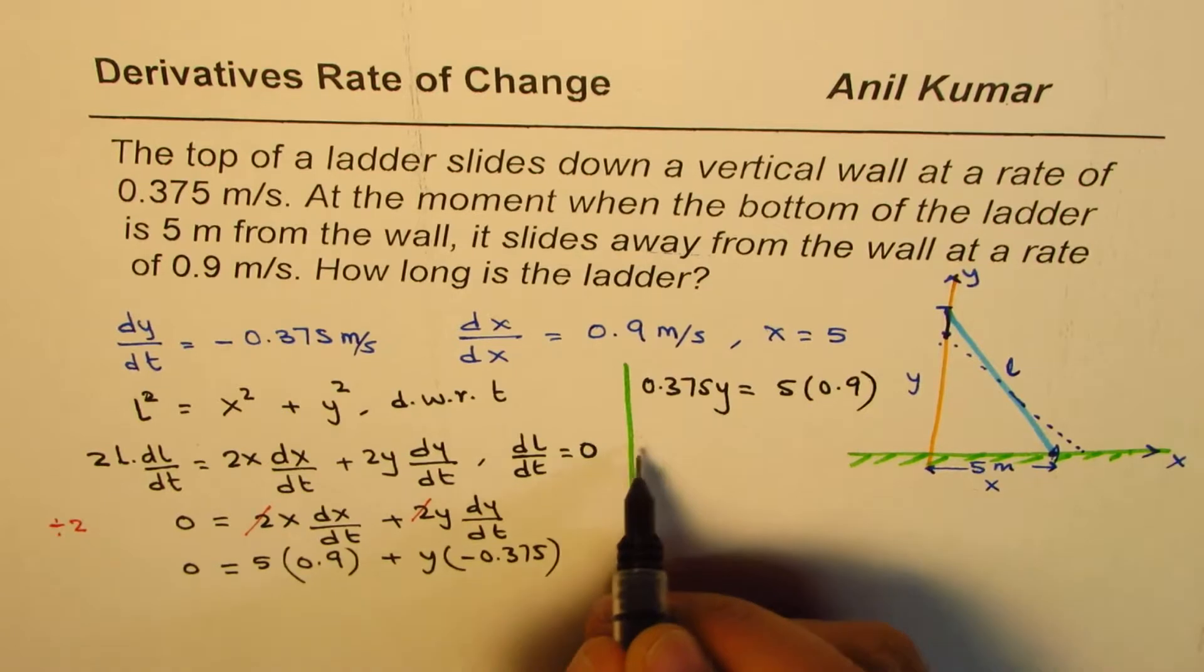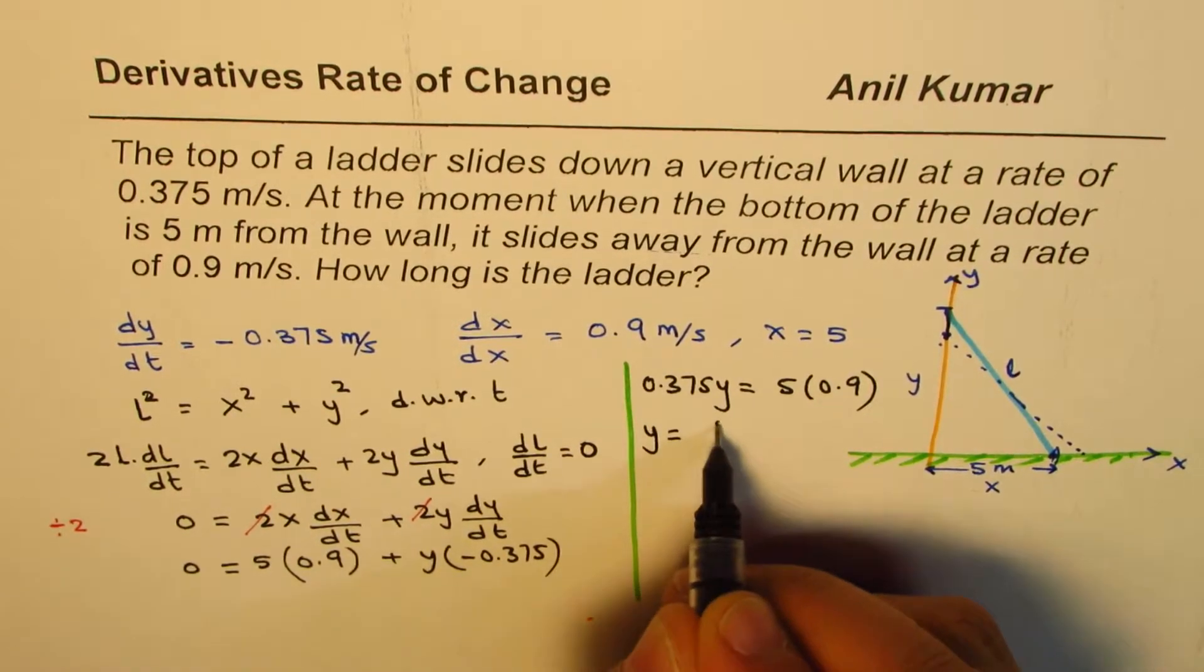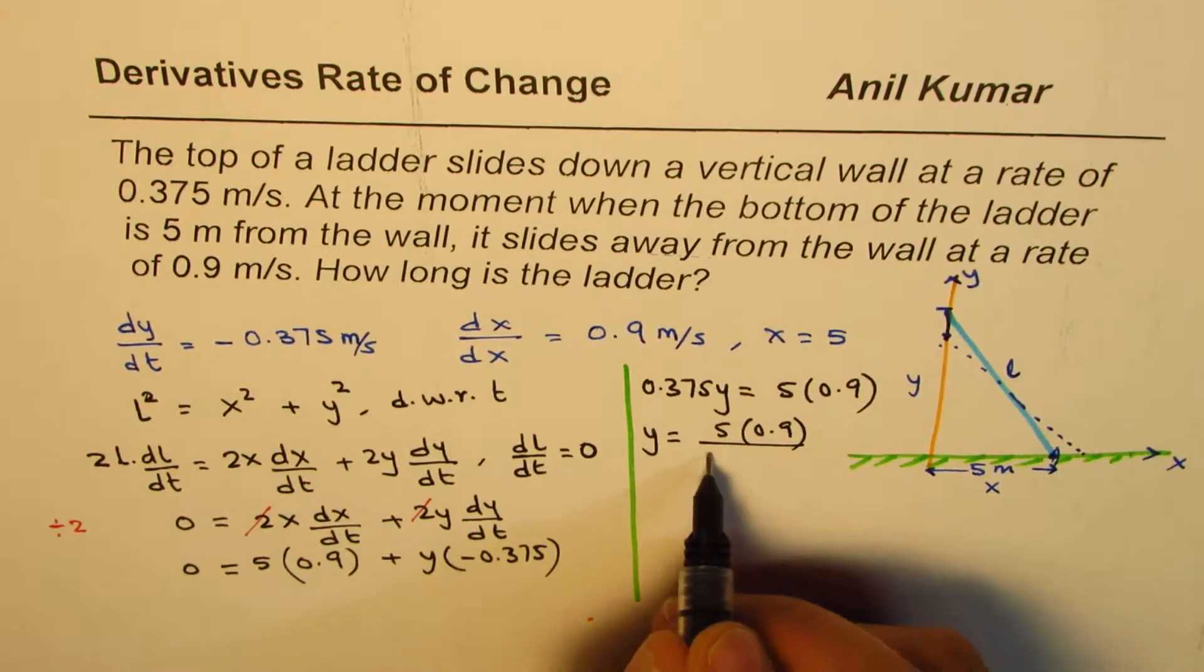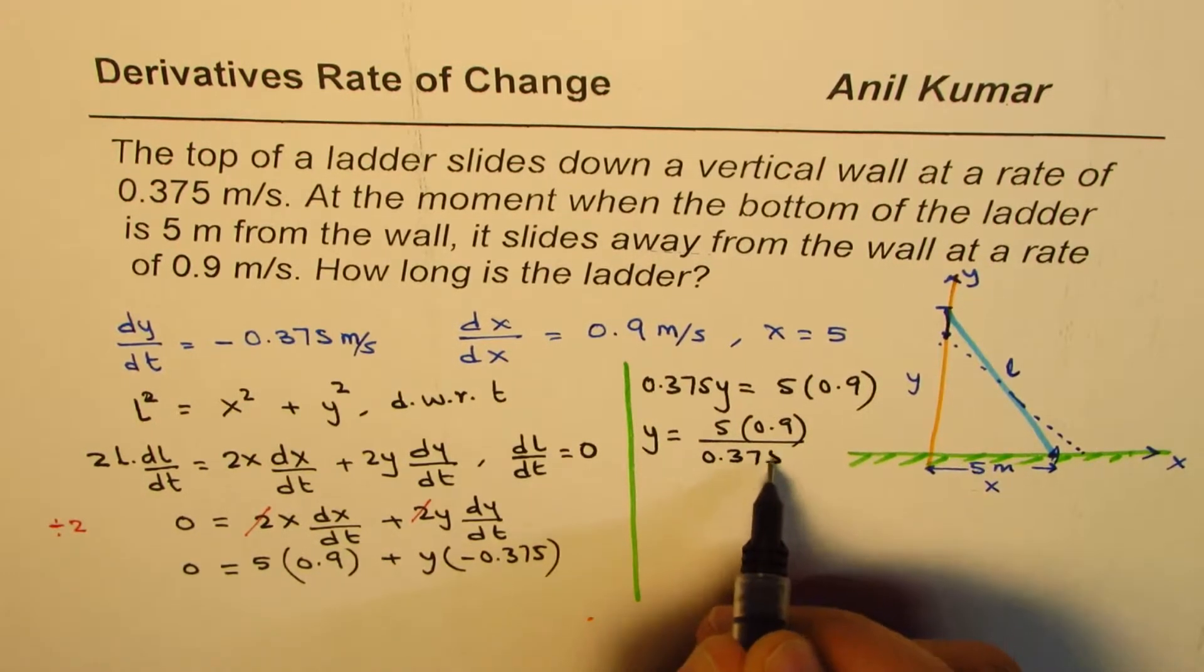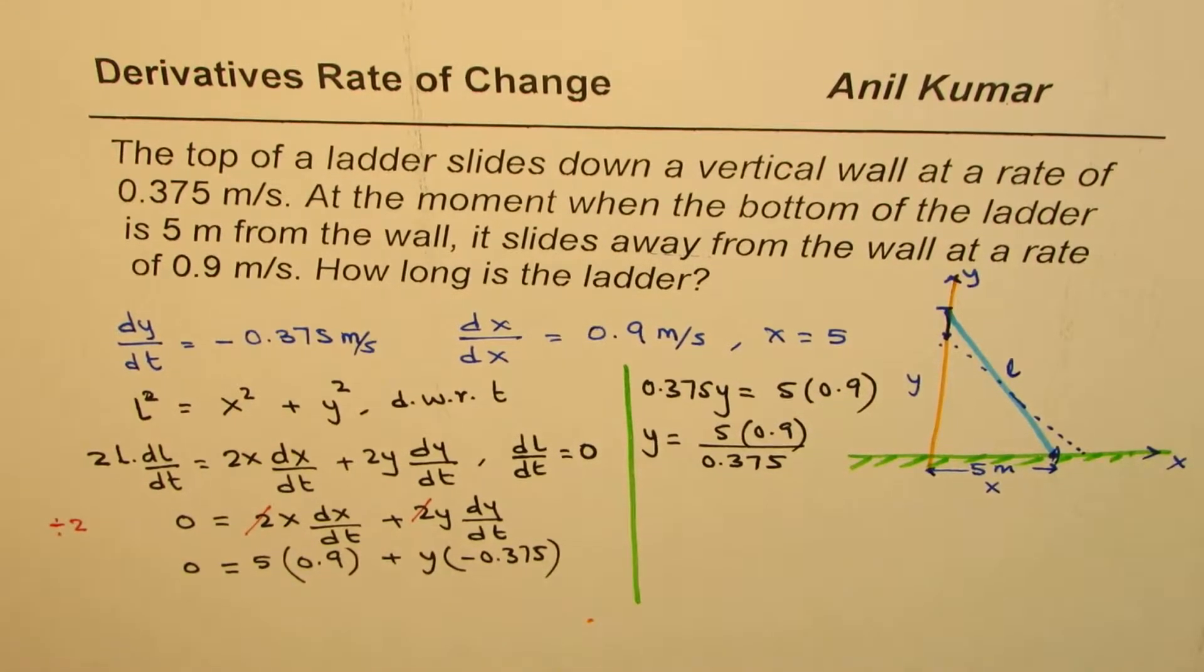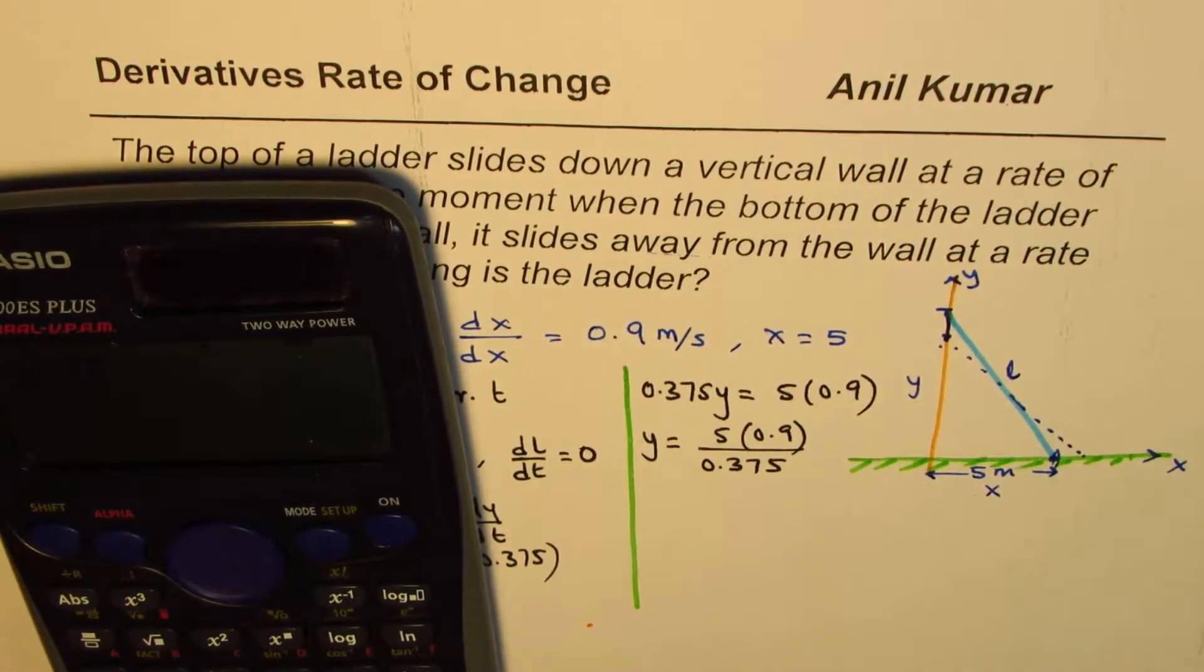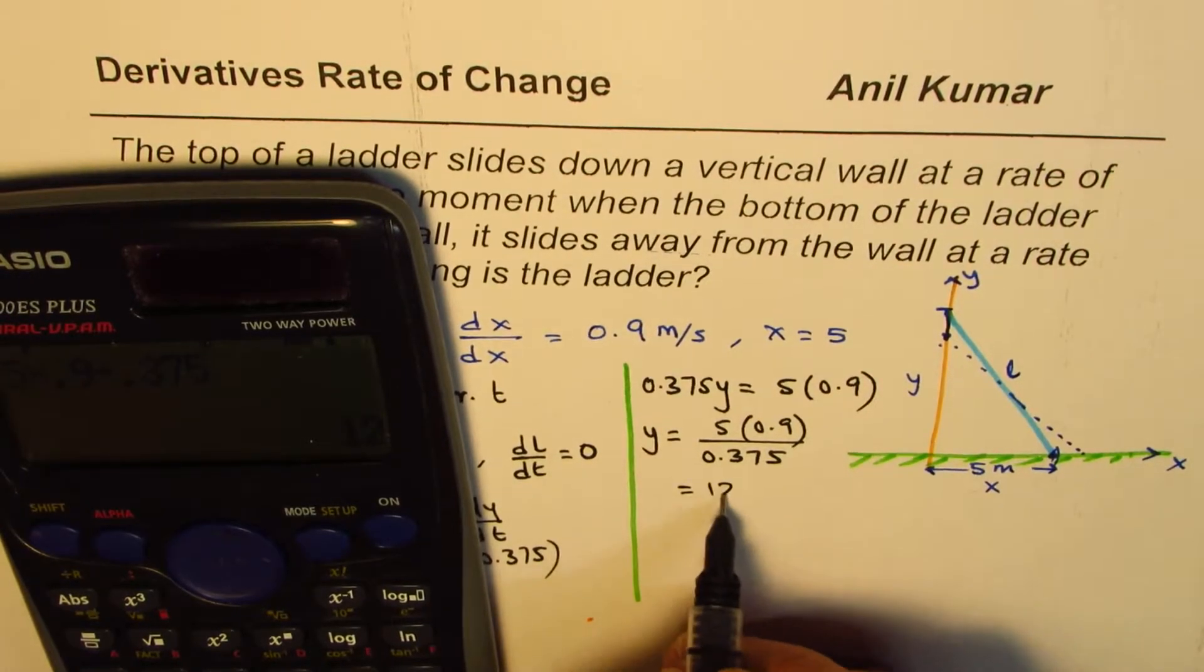And y equals 5 times 0.9 divided by 0.375. Now we can easily calculate this answer, so it is 5 × 0.9 ÷ 0.375 = 12. So we get y = 12.